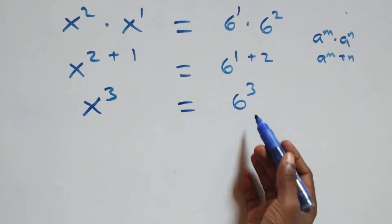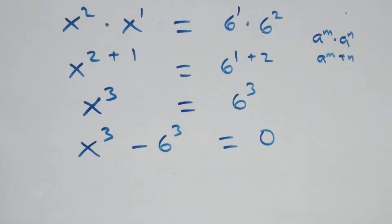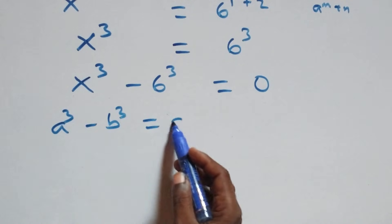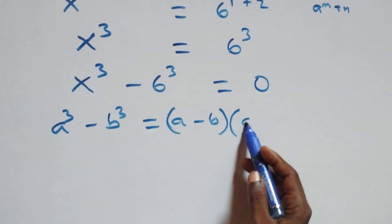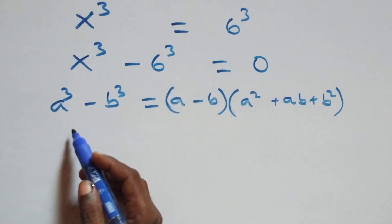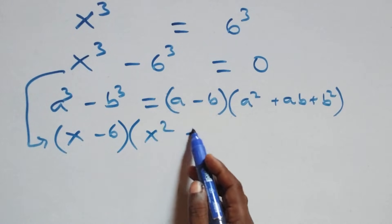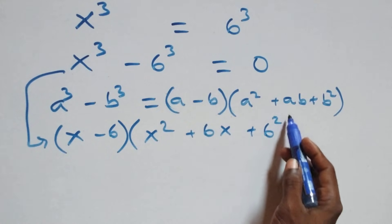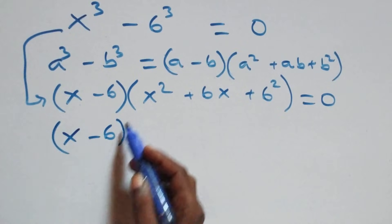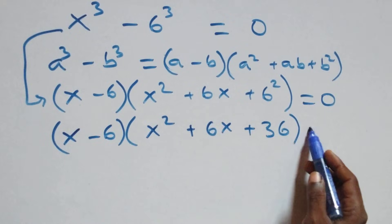Taking 6 cubed to the left hand side, we have x cubed minus 6 cubed equals 0. This follows from the difference of cubes identity: a cubed minus b cubed equals (a minus b)(a squared plus ab plus b squared). So this becomes (x minus 6)(x squared plus 6x + 36) equals 0.